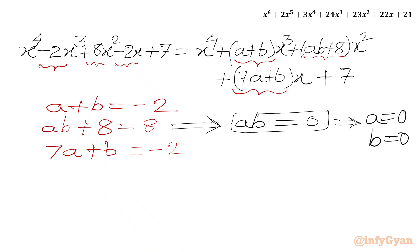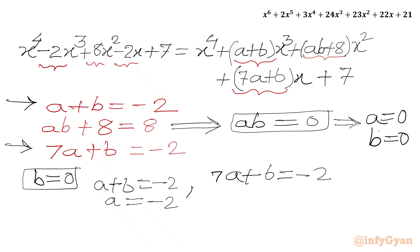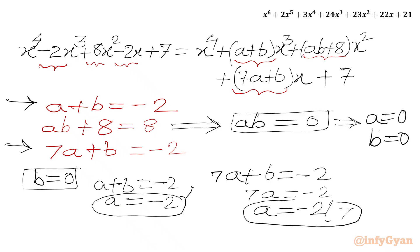If I plug in b equals 0 into the first and third equations: from the first equation, a plus 0 equals minus 2 gives a equals minus 2. But from the third equation, 7a plus 0 equals minus 2 gives a equals minus 2 over 7. Since we get minus 2 and minus 2 over 7, these are inconsistent, so b equals 0 does not work.